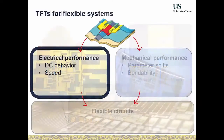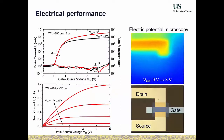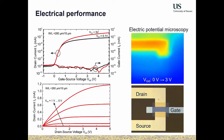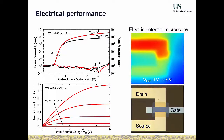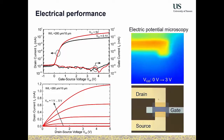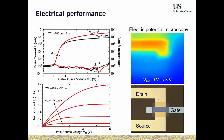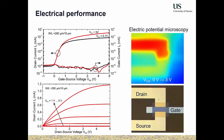Looking at the DC performance, the transistors show mobility around 15 cm²/Vs — pretty standard for this material. Threshold voltages are around 1 volt. From electric potential microscope videos, they work as good switches with on/off ratios in the range of 10⁸.